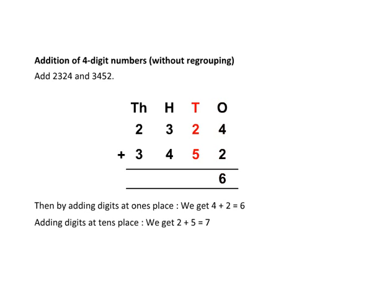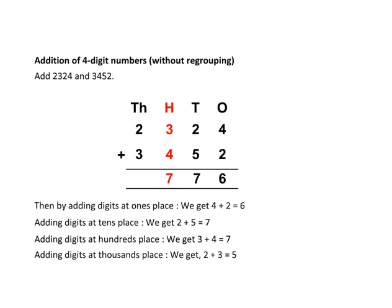Adding digits at 10's place, we get 2 plus 5 is equal to 7. Adding digits at 100's place, we get 3 plus 4 is equal to 7. Adding digits at 1000's place, we get 2 plus 3 is equal to 5.